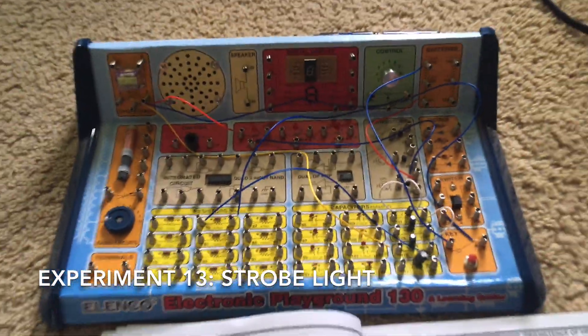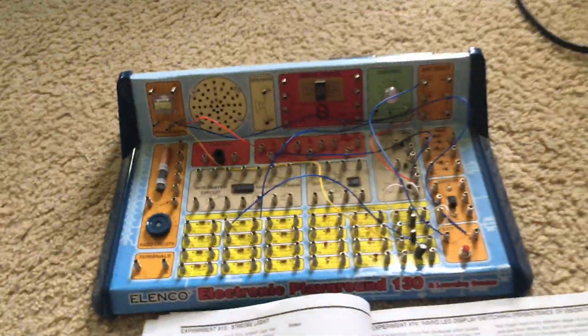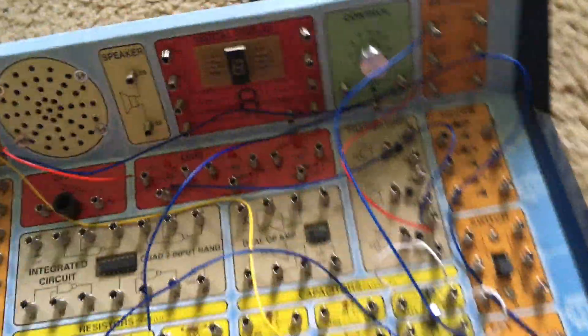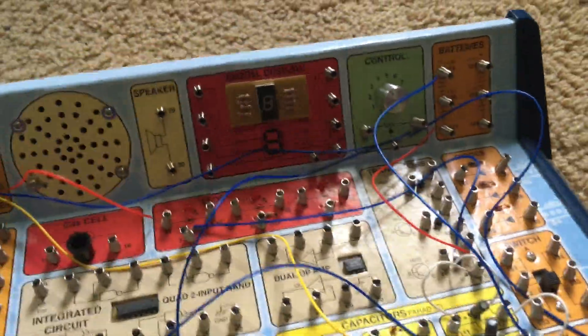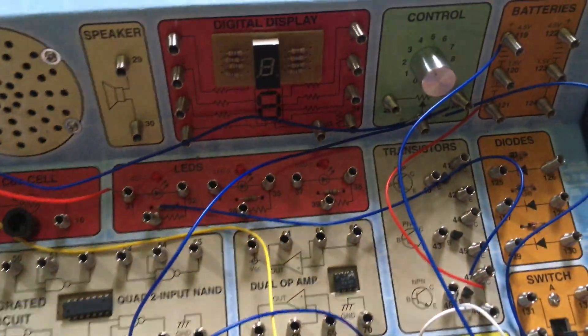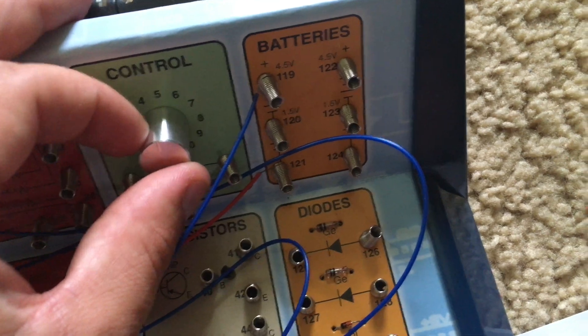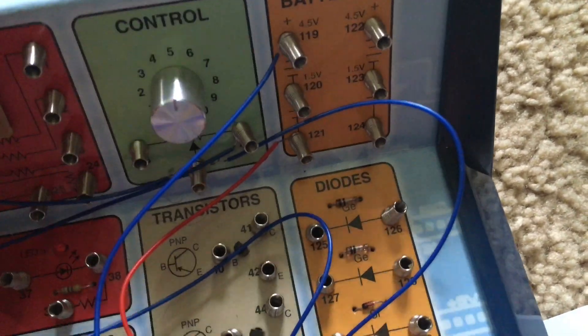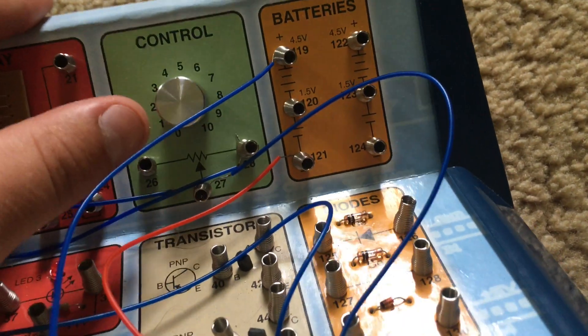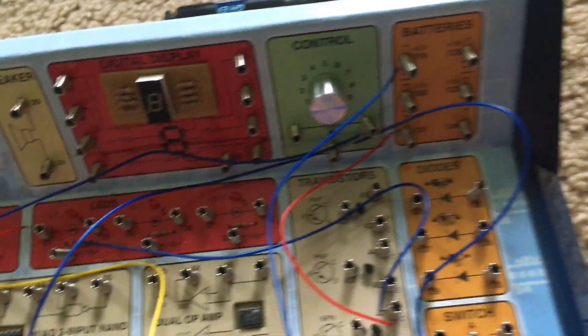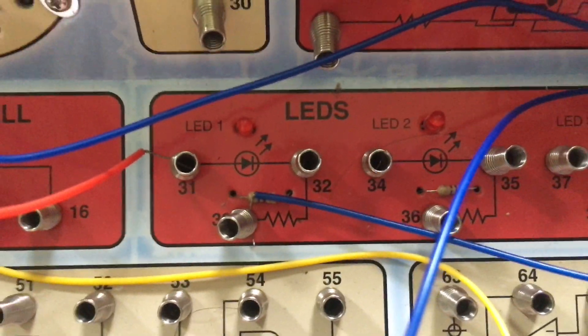Experiment 13 strobe light allows you to see a visual oscillator. Instead of producing sound, this oscillator produces light. The control knob is hooked up and we can adjust it as necessary. I'm going to move it to about five. And then I'm going to hold down the key and watch the first LED.